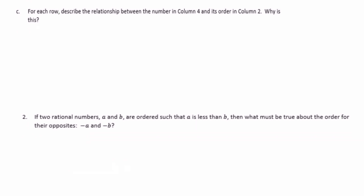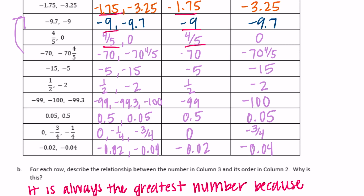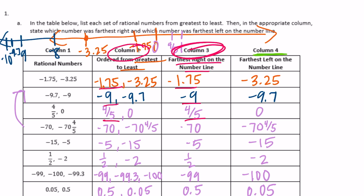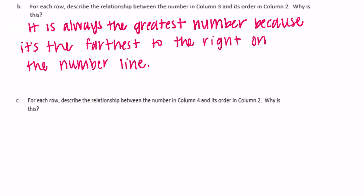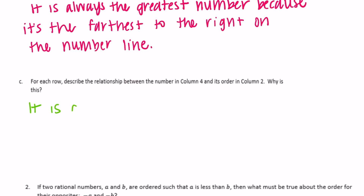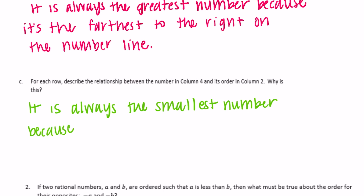For each row, describe the relationship between the number in column 4 and its order in column 2. This is the opposite of what we just did. The number in column 4 is always the last in order — negative 3 and 25 hundredths is the second number, negative 9 and 7 tenths is the second number, 0 is the least. We can say it is always the smallest number because it's the farthest to the left on the number line.